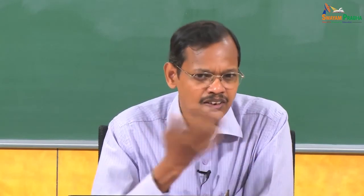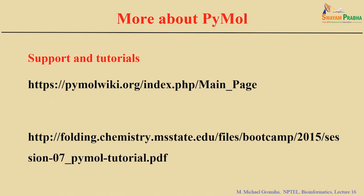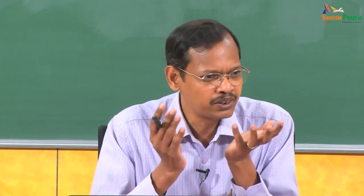PyMOL has several applications — you can compare two structures to see if they are similar, mutate a specific residue and see the changes due to substitution, measure bond angles, bond lengths, and torsion angles, and analyze various types of interactions. You can also get high-resolution publication-quality figures. An important feature is that PyMOL supports Python scripting for custom user needs — you can find interface residues, pairwise distances, and so on. Tutorials and website resources are available for more information.